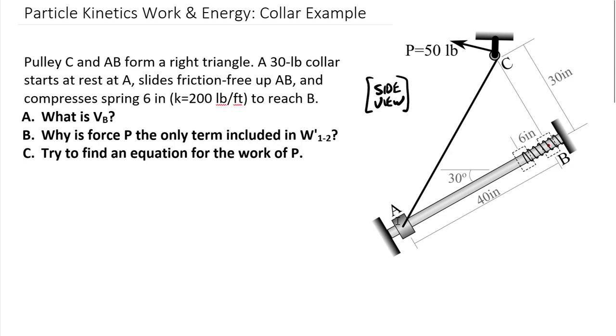Because this is a kinetics problem, we're going to create a free body diagram, analyze those forces, and determine any that might be included as the external work term. Why is force P the only term included as that external work? We also know that rod AB is friction free, so we'll have no friction as the collar slides from A to B. Given that context, let's start with a free body diagram.